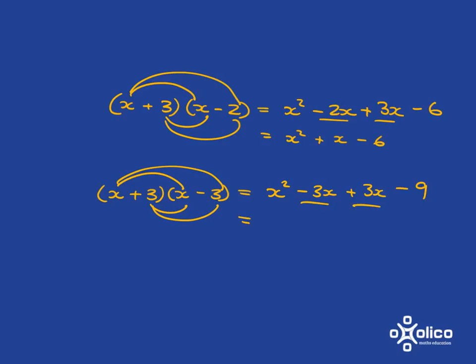There are your like terms. But when you add together 3x and minus 3x, they just cancel each other out. And so you just end up with 0 for that. And so you get x squared minus 9. And in this case, you only have two terms.